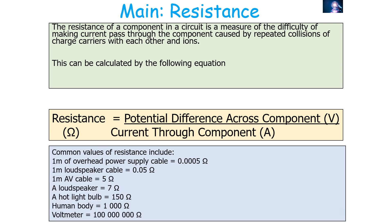Common values of resistance include: a one-metre overhead power cable at 0.005 Ohms; a one-metre loudspeaker cable at 0.05 Ohms; a one-metre AV cable at 5 Ohms; a loudspeaker itself at 7 Ohms; a hot light bulb at 150 Ohms; the human body at around 1,000 Ohms; and a voltmeter at 100 million Ohms.